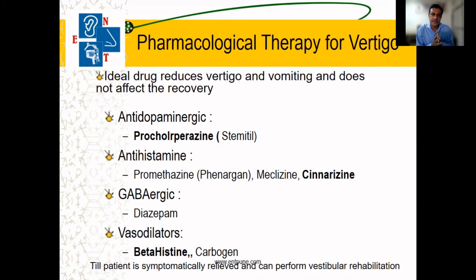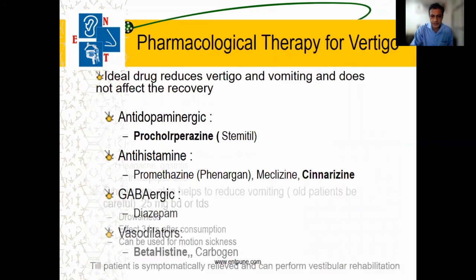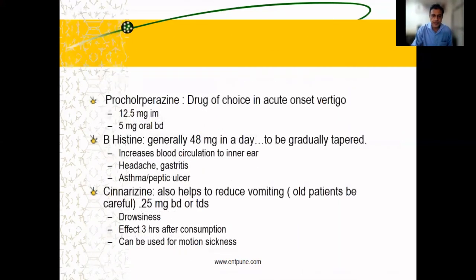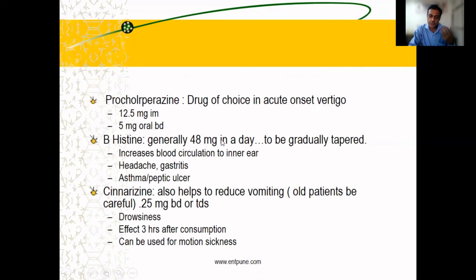Depending on the kind of vertigo and the patient's diagnosis, different medicines may be used. Prochlorperazine is commonly used — any patient having severe vertigo should keep prochlorperazine tablets with them. A 5 milligram sublingual dose should be used in severe episodes of vertigo to reduce the symptoms.